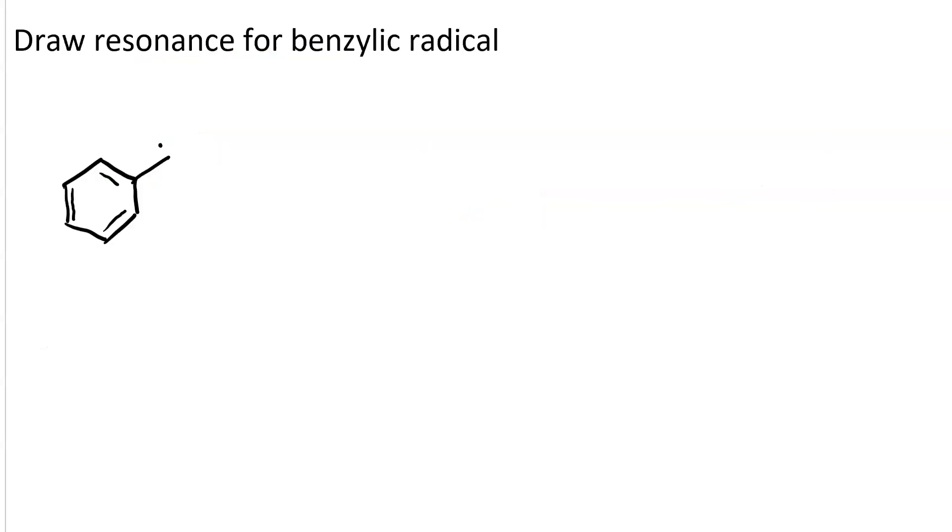Here is a benzylic radical. The pattern of curved arrows in the resonance for the benzylic radical looks very similar to that for the allylic radical. Those two electrons are forming a new pi bond. And this one is forming a new radical.